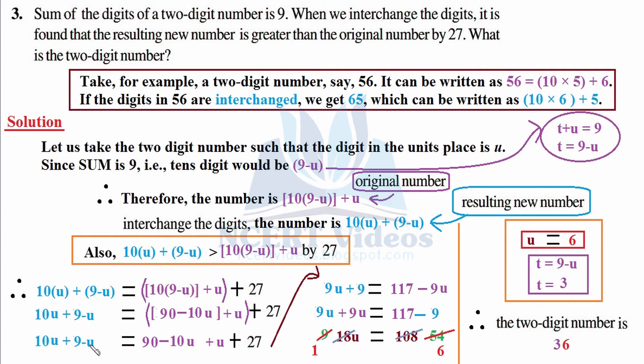10u - u, that is 1u, is 9u. We are left with positive 9 on left hand side. On the right hand side, 90 + 27 is 117, and -10u + u gives us -9u.